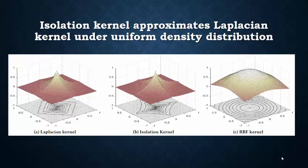What you see here are example kernel distributions from three kernels. Isolation kernel under uniform density distribution is compared with Laplacian and RBF kernels. This shows that isolation kernel approximates Laplacian kernel under uniform density distribution.